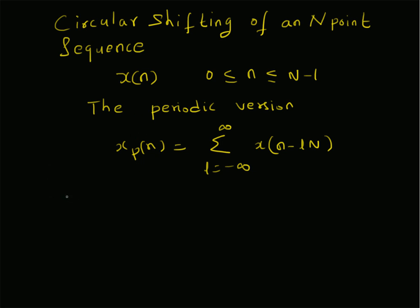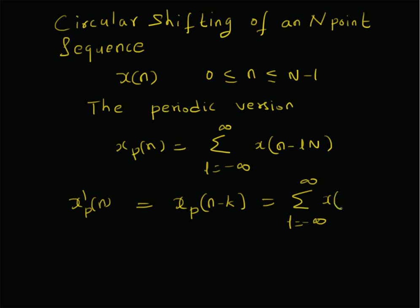Now let us define another sequence xp'(n), which is equal to a shifted version of xp(n), that is, xp(n minus k). By using this definition, it becomes the summation l equal to minus infinity to plus infinity, with n replaced by n minus k, so it is x(n minus k minus lN). So xp'(n) is equal to this sum: l equal to minus infinity to plus infinity of x(n minus k minus lN).